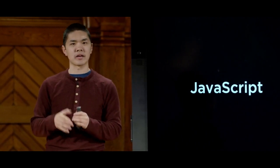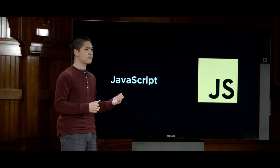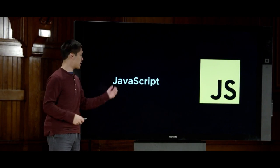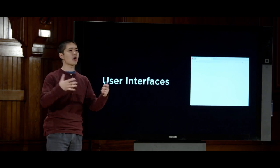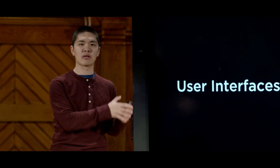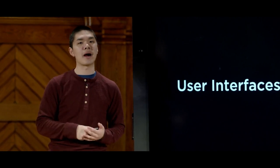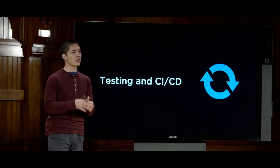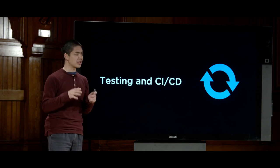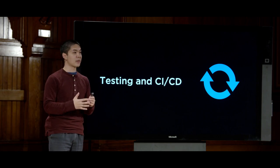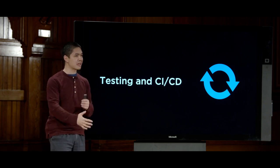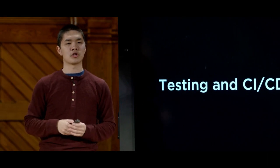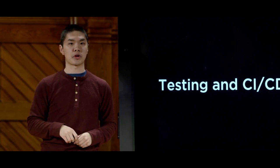Next, we'll turn our attention to the second main programming language in this class: JavaScript — looking at how we can use JavaScript to run in users' web browsers to make web pages more interactive. We'll use JavaScript in the context of user interfaces, exploring how modern interfaces work and how we can develop those interfaces with a combination of Python and JavaScript. Then we'll turn our attention to testing and CI/CD, or continuous integration and continuous delivery, which are software best practices to help us design and develop code more efficiently and ensure our web application behaves as it should.